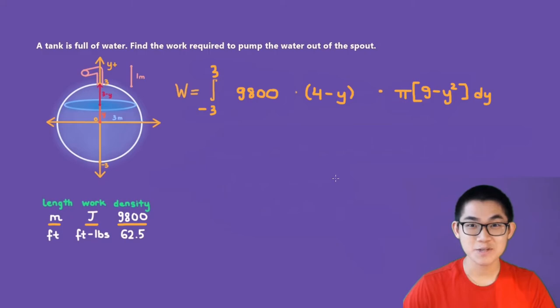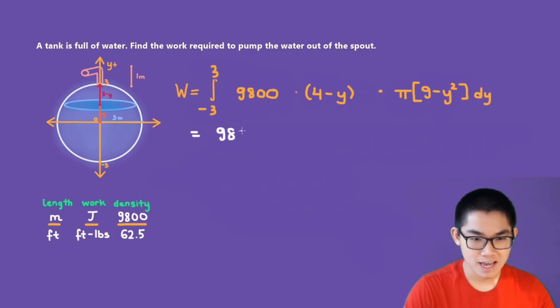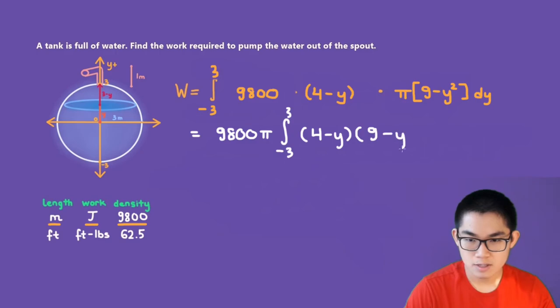The last step is to evaluate this integral. So since 9,800 and pi are both constants, we can move it outside of the integral. So the work is equal to 9,800 times pi times the integral from negative three to three of four minus Y times nine minus Y to the power of two.